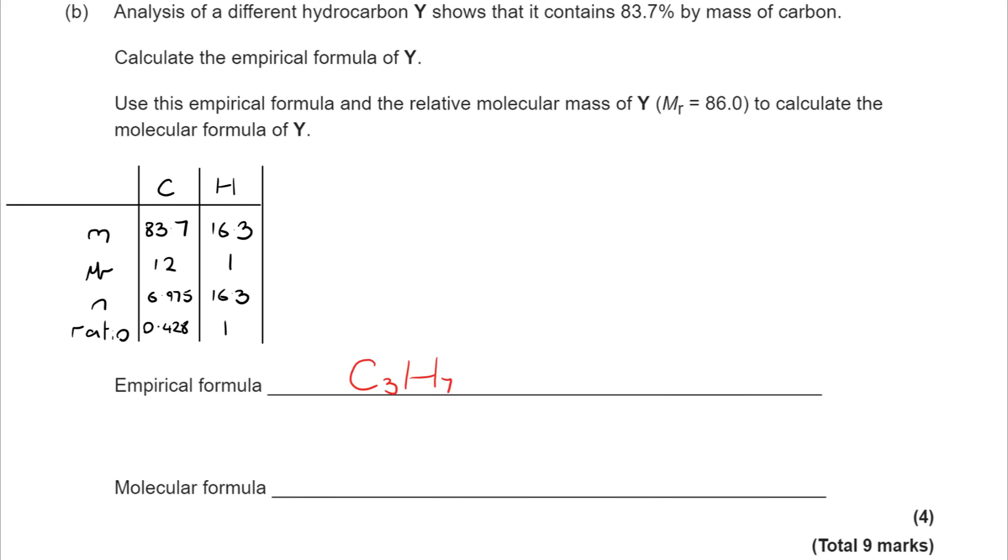If I divide those by the smallest, I end up with 0.428 to 1, which isn't the most straightforward. And it's too far away to just round up the 0.428 to 0.5. So you need to play around a little bit with that to get to the 3 to 7 whole number ratio.